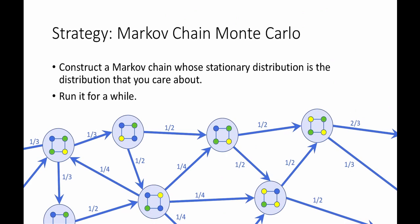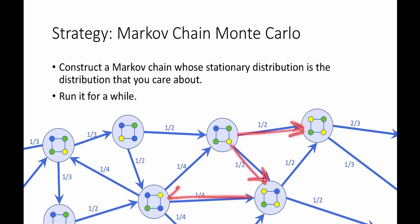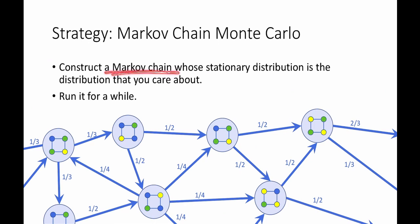The idea of Markov chain Monte Carlo is the following. First, we're going to construct a Markov chain whose stationary distribution is the distribution that you care about. In the example above, the states of this Markov chain would be proper colorings, and we'd have some probabilistic way of moving from coloring to coloring so that the stationary distribution is the uniform distribution on all proper colorings.